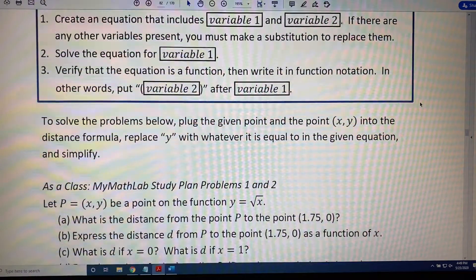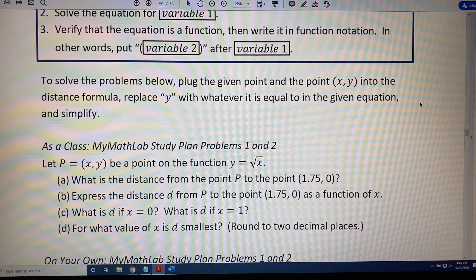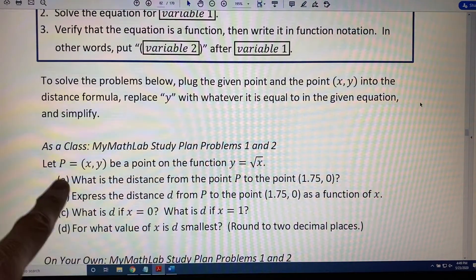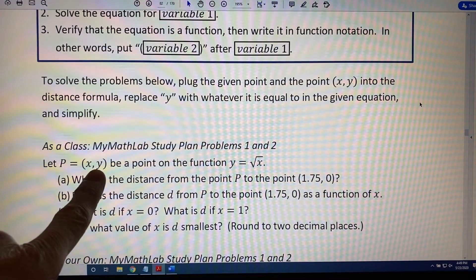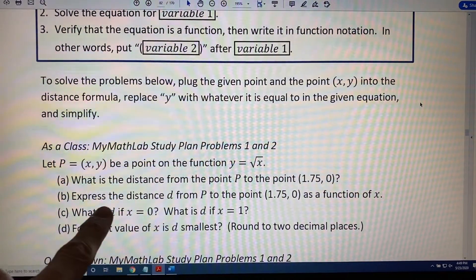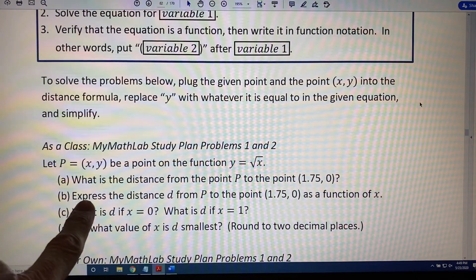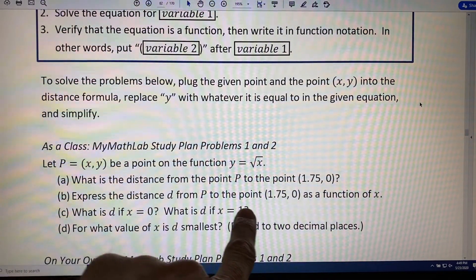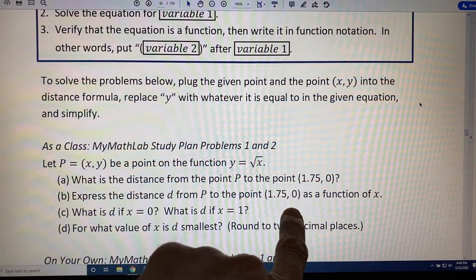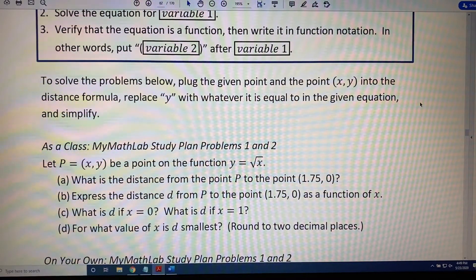Here's a problem of that type. The most important part of which is, if P is the point (x, y) on a function y equals the square root of x, express the distance d from P to the point (1.75, 0) as a function of x.